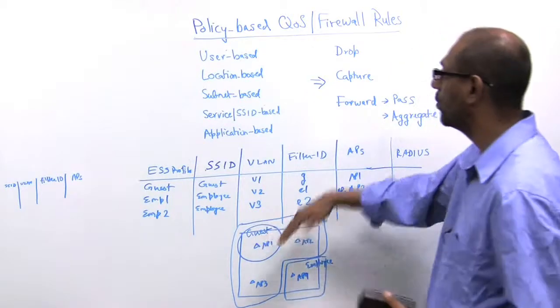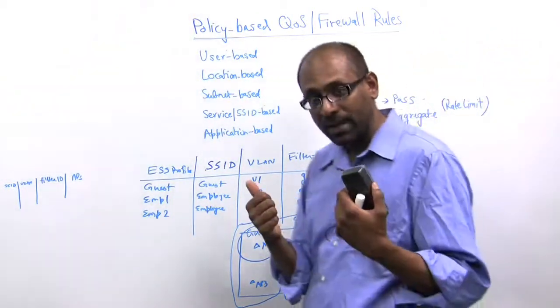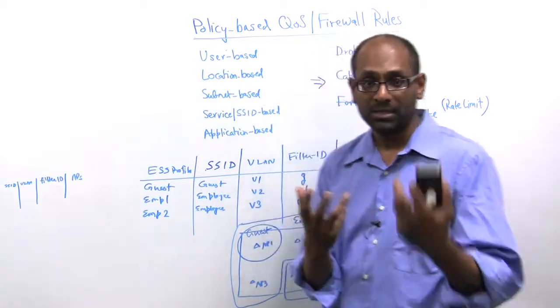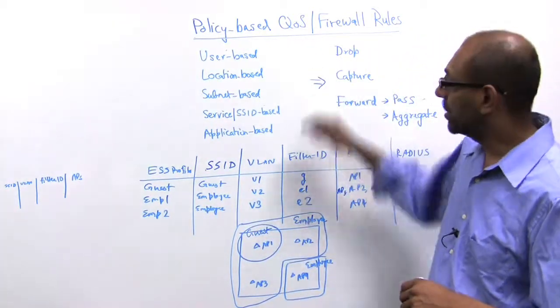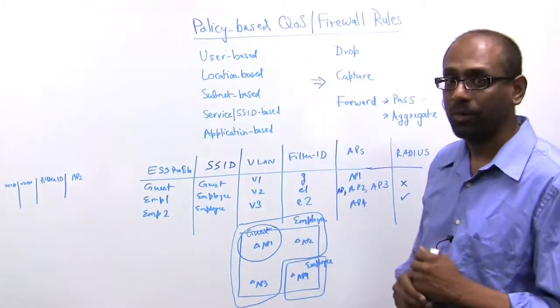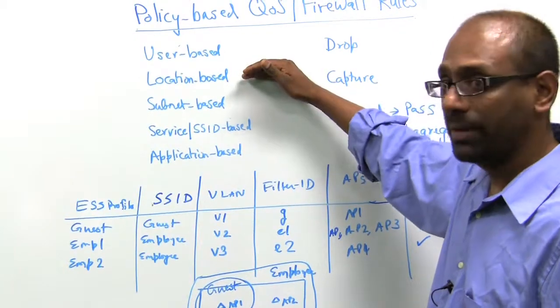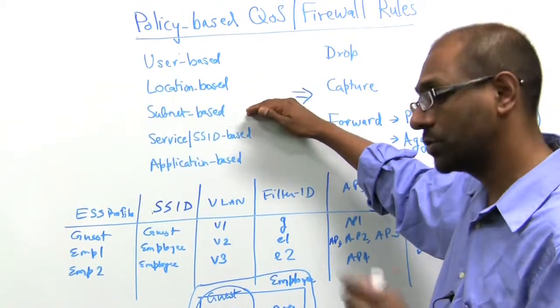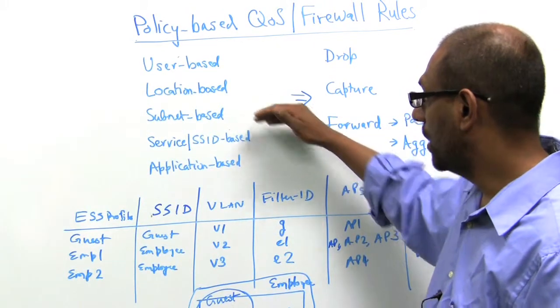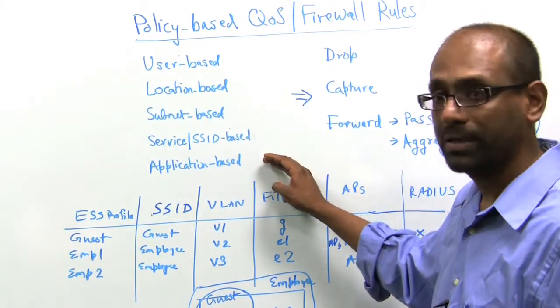So let's keep it at that and now move on to the next level of trying to differentiate services and differentiate the way packets are transmitted or treated based on policies. And there are five basic classes of policies. One is user-based. The second is location-based. The third is subnet-based, based on the IP addresses of the source and or destination. The fourth one is service or SSID-based, and the last one is application-based.